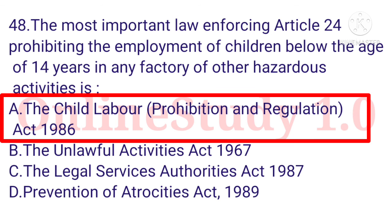Question number 48: The most important law enforcing Article 24, prohibiting the employment of children below the age of 14 years in any factory and other hazardous activities, is option A: The Child Labour (Prohibition and Regulation) Act, 1986.